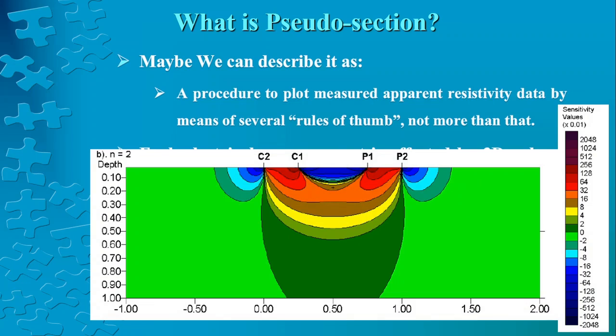If you plot this methodology in the sensitivity section of the dipole-dipole array for n equals 2, you will see that the location of the data point will be this black star. If you look at this, you will see that much of the area with very high sensitivities are just close to the electrodes, and we are assuming a measurement to a location which is very less affected by the measurement.